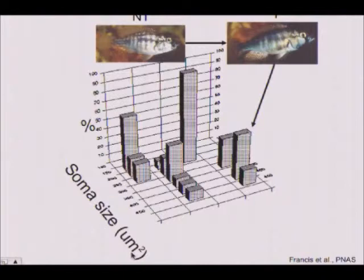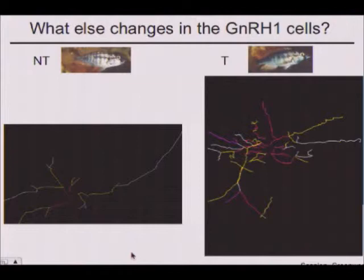It's not just the cells that change size — they also change their dendritic extent. Here they are in an NT male, these are the dendrites mapped. They're much more elaborate in the T male. We now know they connect to one another in the T male — they produce a syncytium and fire synchronously. So there are those changes as well, and it's under social regulation.